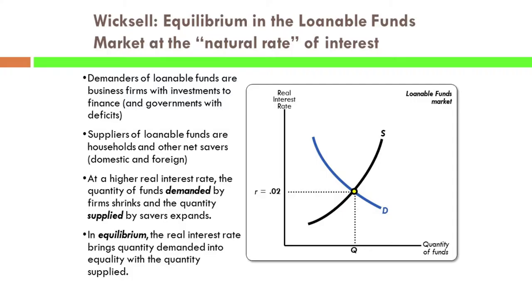And of course, that's been a bigger and bigger share of the demand in recent years. On the supply curve, we have the suppliers of loanable funds, which have traditionally been households. Some households borrow, but on net, the household sector is supplying loanable funds, mostly because people are saving for their retirement. That's the biggest motive people have for saving.